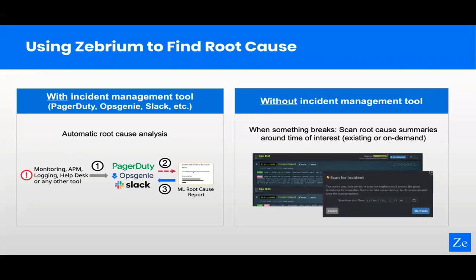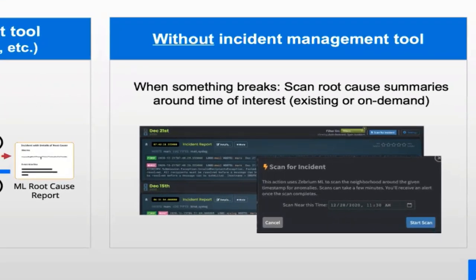Everything is automated and you'll see everything you need inside PagerDuty without any log hunting. You can also use Zebrium without an incident management tool — when something breaks, just look at the Zebrium root cause dashboard. We're always proactively scanning for root cause patterns; click on the relevant one and you'll see a root cause report. If you don't see a relevant one, click the blue scan for root cause button and enter a time. We'll treat that as a signal and perform an on-demand scan for root cause. Because our ML is constantly scanning, many engineering teams also use us to proactively detect problems — especially unknown unknowns that don't have detection rules.